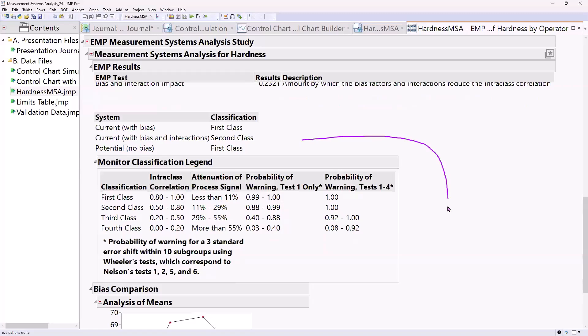And I have to consider what was it going to cost me if I want that to be a first class gauge. And really, what am I giving up by continuing to use this gauge as a second class gauge? The monitor class legend can help us out with that a little bit.